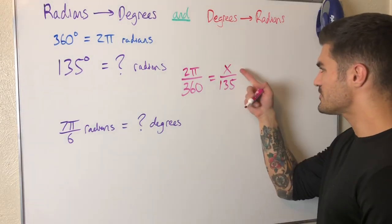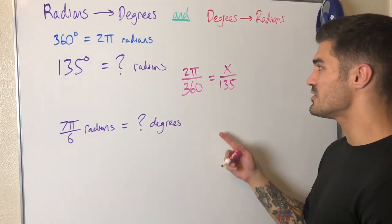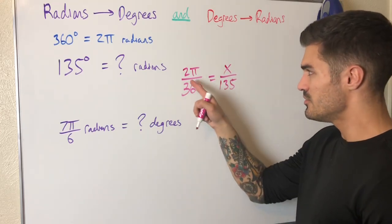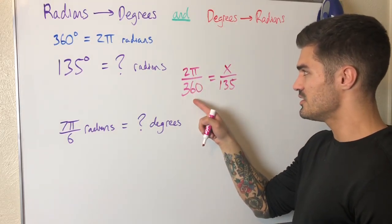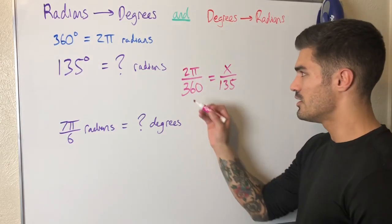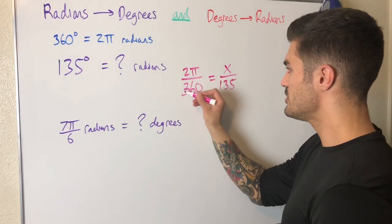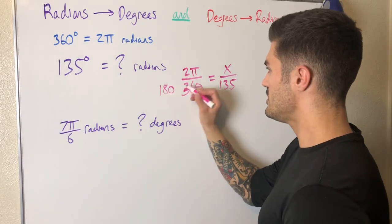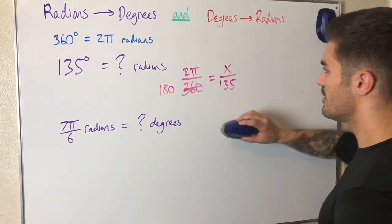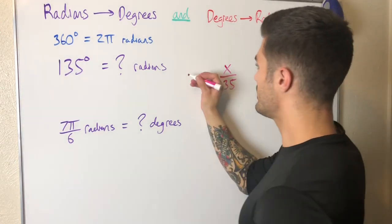If we solve this for x, then we have 135 degrees converted to radians. The first thing I notice is that I can actually simplify this before I do any solving, because 2 over 360—I can divide 360 by 2. Basically I'm multiplying top and bottom by 1 half. I can cross this 2 into 360 and I'm left with 180 on the bottom and just π on the top.